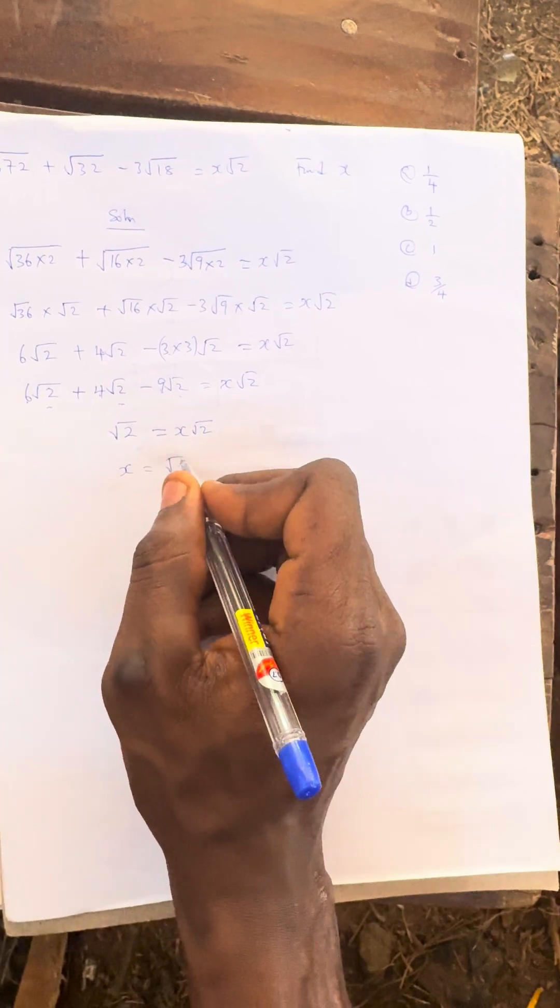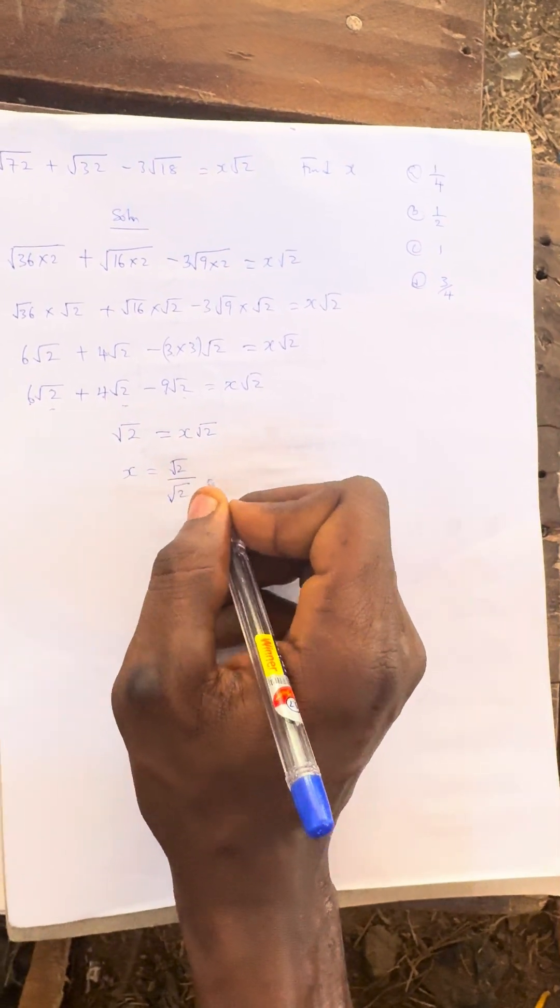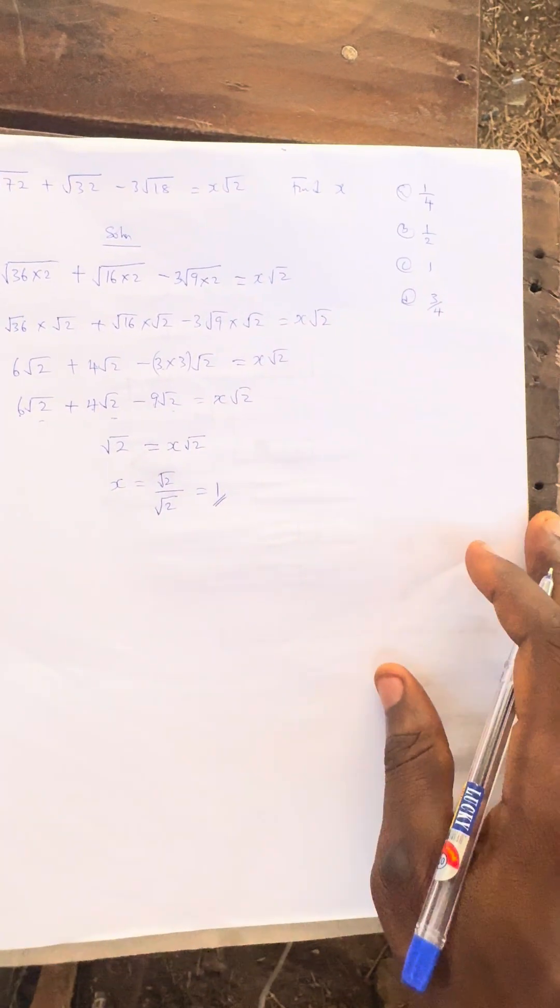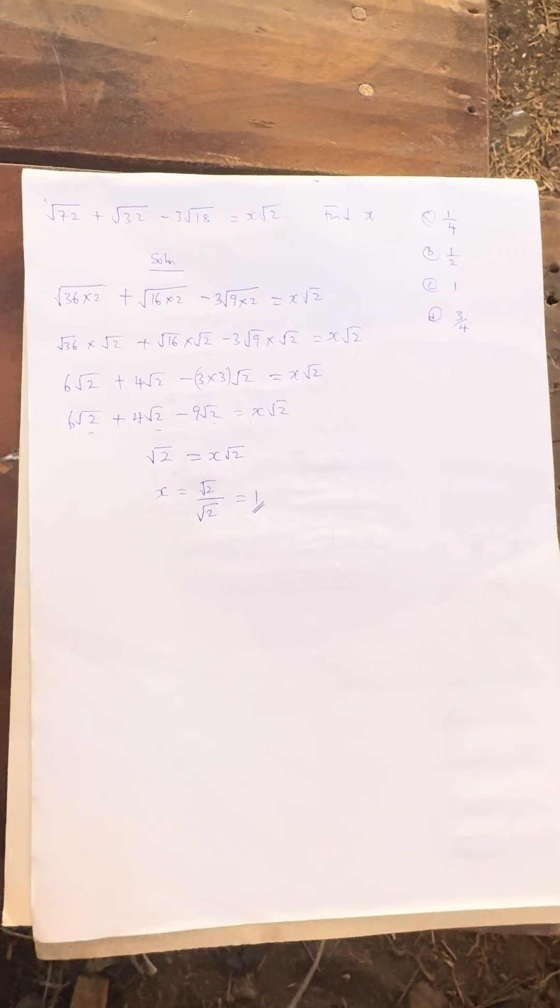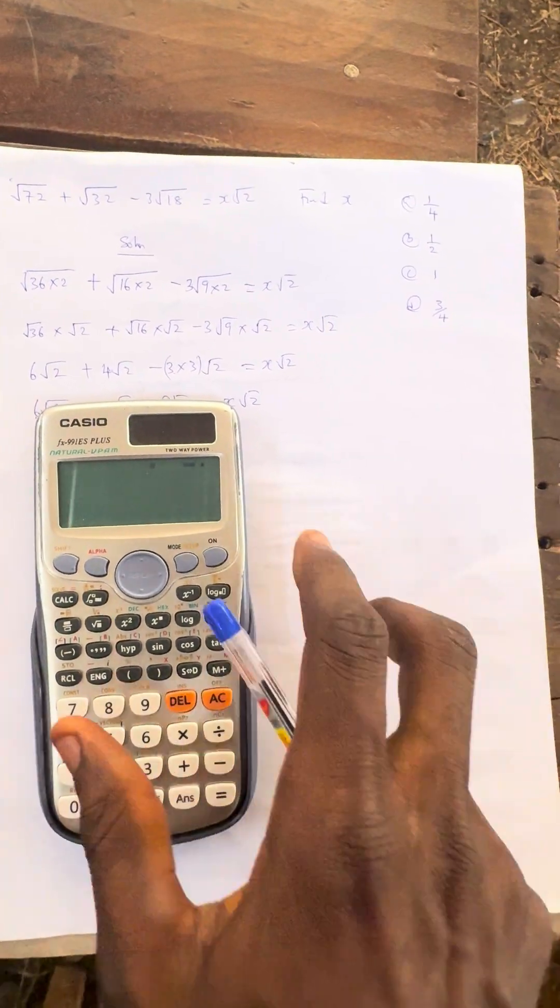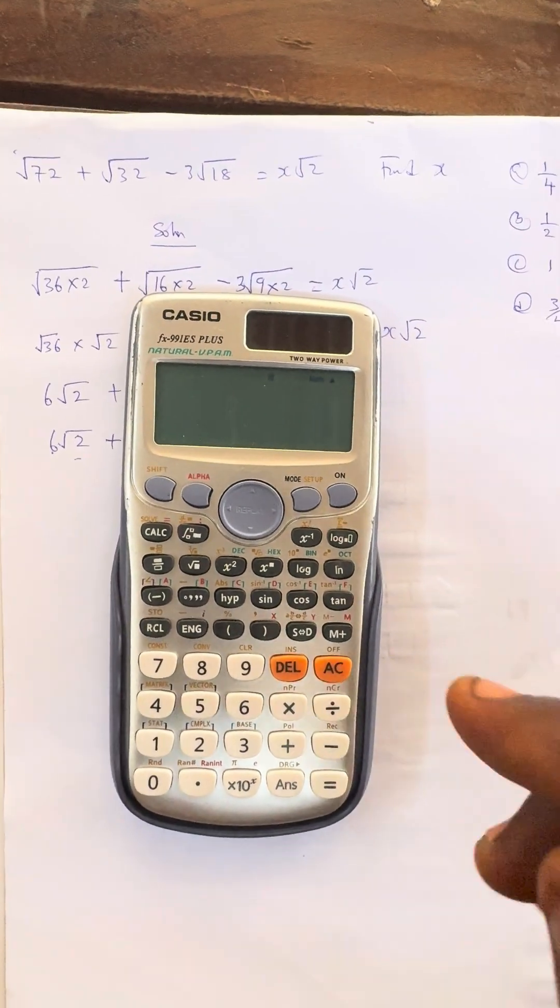Make x the subject of formula: x = √2/√2, which equals 1. The answer is 1. But if I want to solve this, I'll just press the question straight up using the optional method.